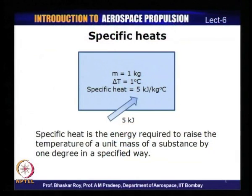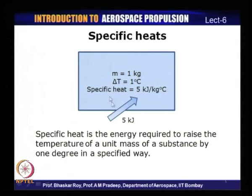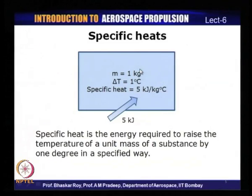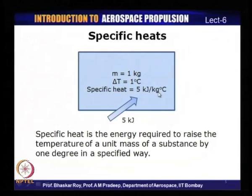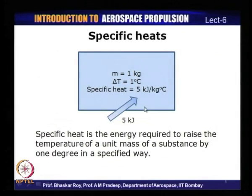What is shown here is a particular mass of 1 kg, and we have to increase its temperature by delta T equal to 1 degree Celsius. If we need 5 kilojoules of energy to accomplish this, then the specific heat for this particular process will be 5 kilojoules per kilogram degree Celsius. This is how one would define specific heat for a particular process.